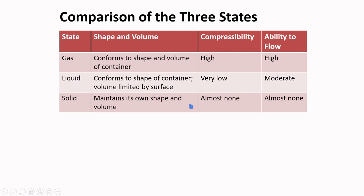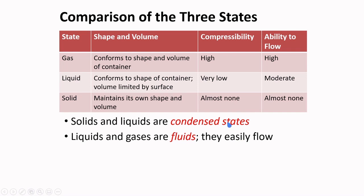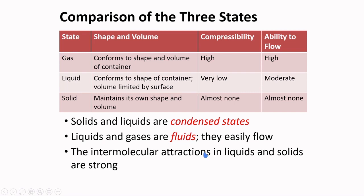For the solid, they maintain their own shape and volume. They are almost incompressible and almost no ability to flow can be observed. We can say that solids and liquids are condensed states. Liquids and gases are fluids. They easily flow compared to solids. The intermolecular attractions in liquids and solids are stronger compared to gases. And particles of solids has the highest degree of ordering. There is a decrease in ordering moving to liquid and then to gas.